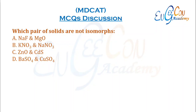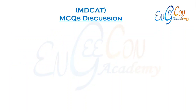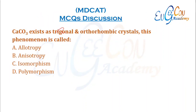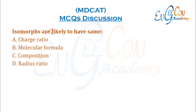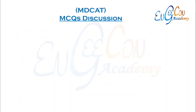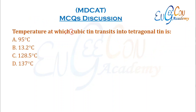Which pair of solids are not isomorphs? The three pairs given in the textbook table are examples of isomorphs, so the remaining option is not an isomorph. CSCO3 exists in two different forms — this phenomenon is called polymorphism, where a substance exists in more than one crystalline form. Isomorphs are likely to have the same radius ratio, which is why their shape is also the same. The transition temperature of tin from cubic to tetragonal is 13.2°C.